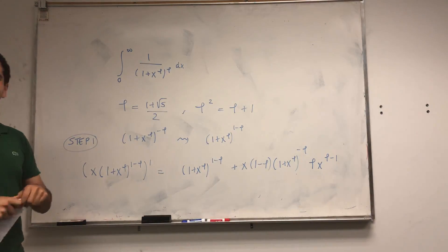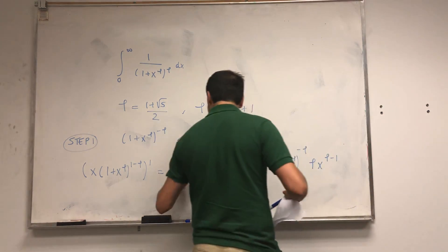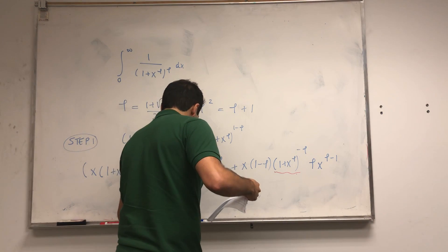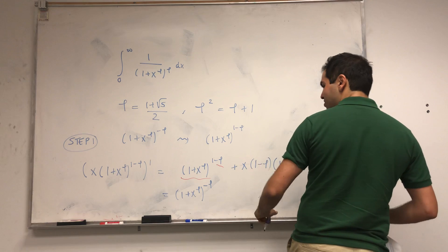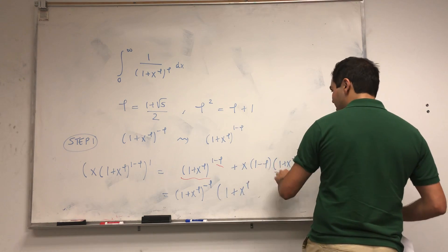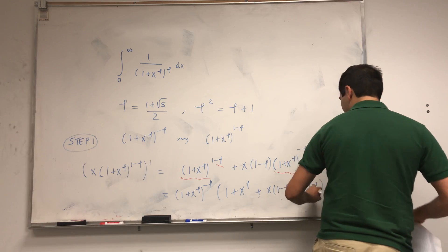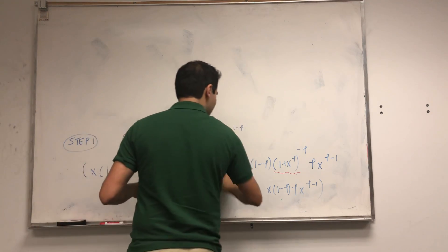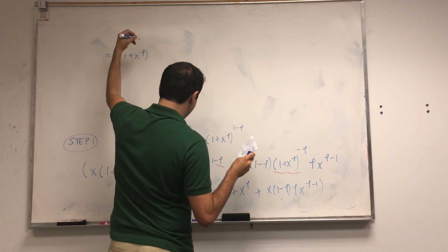Now you differentiate the inside, which becomes phi times x^(phi-1). I know, lots of phi's, but good thing we're not in Pi Mu Epsilon. Now the next step is to factor out (1 + x^phi)^(-phi). There are many different ways of doing this, but let's do it my way. So (1 + x^phi)^(-phi) times—on the one hand we still have a factor of (1 + x^phi), on the other hand we have x times (1-phi) times phi times x^(phi-1), which we can simplify.